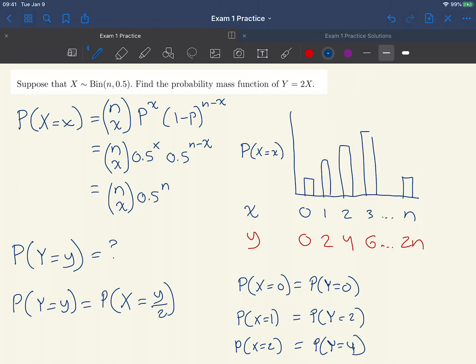To wrap up the problem, all we have to do is take the PMF of X and plug in y over 2. I'll write that out here in purple for the final answer. The probability that Y equals y is the same as the probability that X equals y over 2, and finally that equals n choose y over 2, 0.5 to the n. This is our final answer.